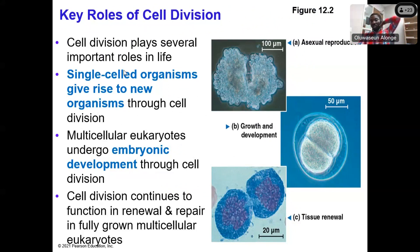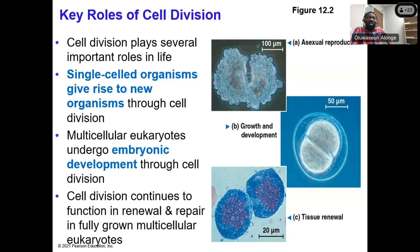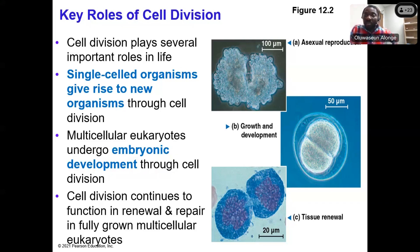Key roles of cell division: single-cell organisms give rise to new organisms through cell division. Multicellular organisms undergo embryonic development through cell division. Cell division continues to function in renewal and repair in fully grown multicellular organisms. So renewal, repairs, and growth are all related to cell division — and particularly to mitosis.